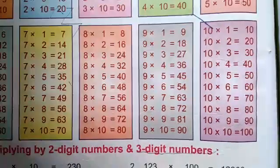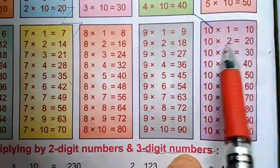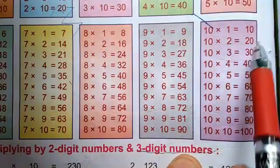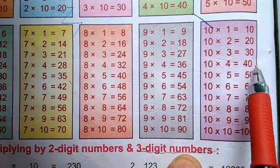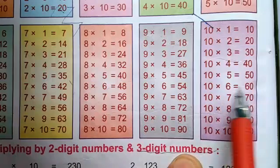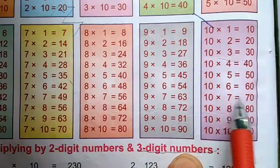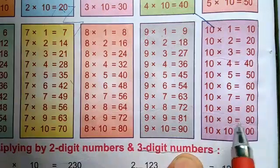Now table of 10: 10 times 1 is 10, 10 times 2 is 20, 10 times 3 is 30, 10 times 4 is 40, 10 times 5 is 50, 10 times 6 is 60, 10 times 7 is 70, 10 times 8 is 80, 10 times 9 is 90.